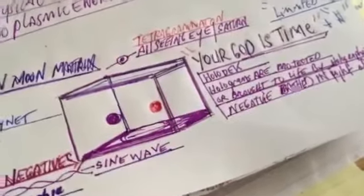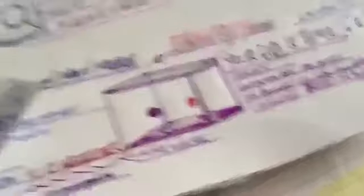Look up information about the time cube. You'll see what's going on here. All the symbols are the sine wave. You'll see your DNA is the sine wave. You'll see it's the money sign. Time is money. Your God is time. Time is money. You've been squared.